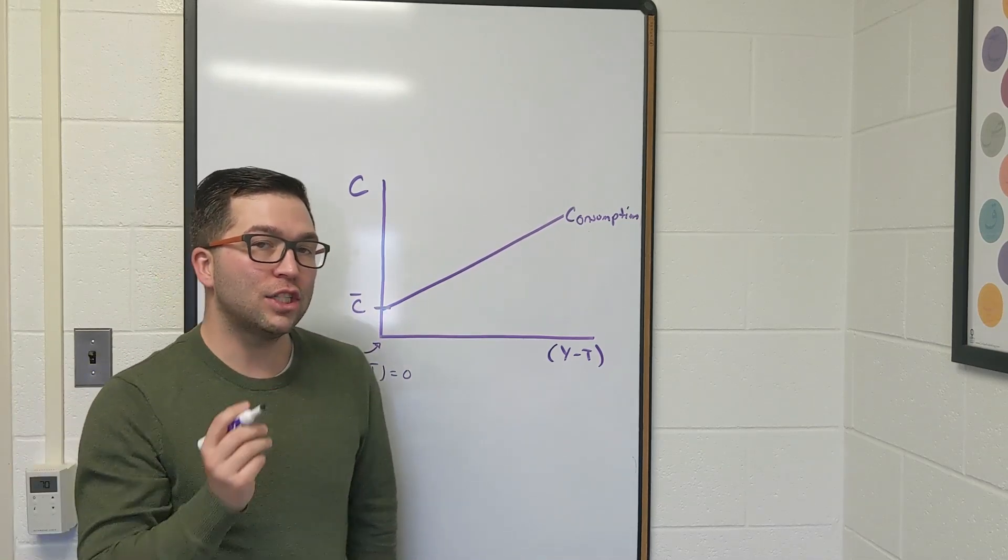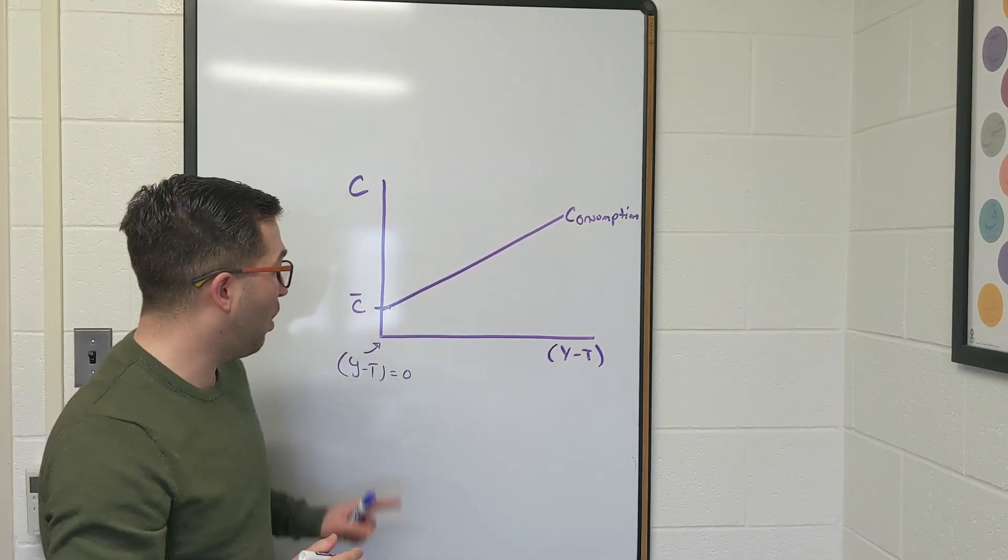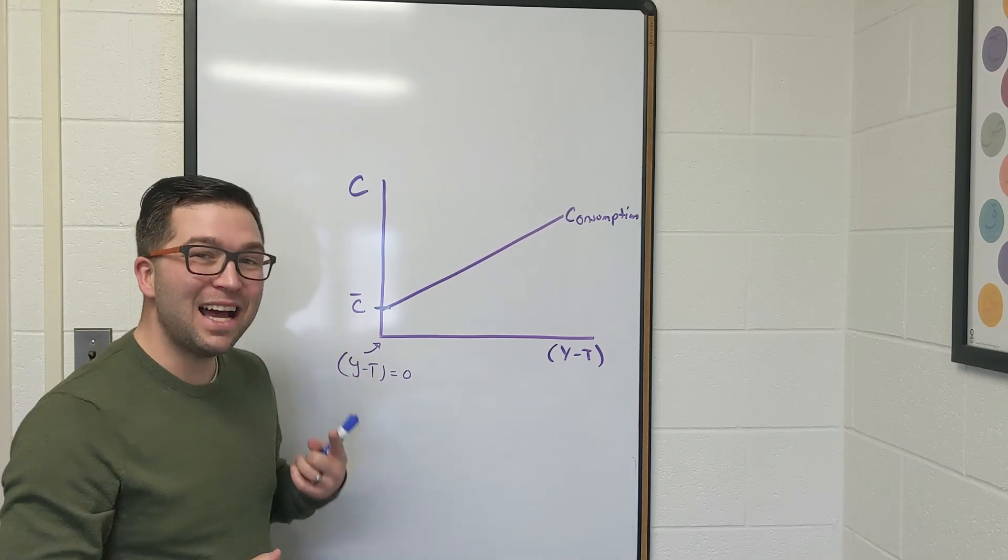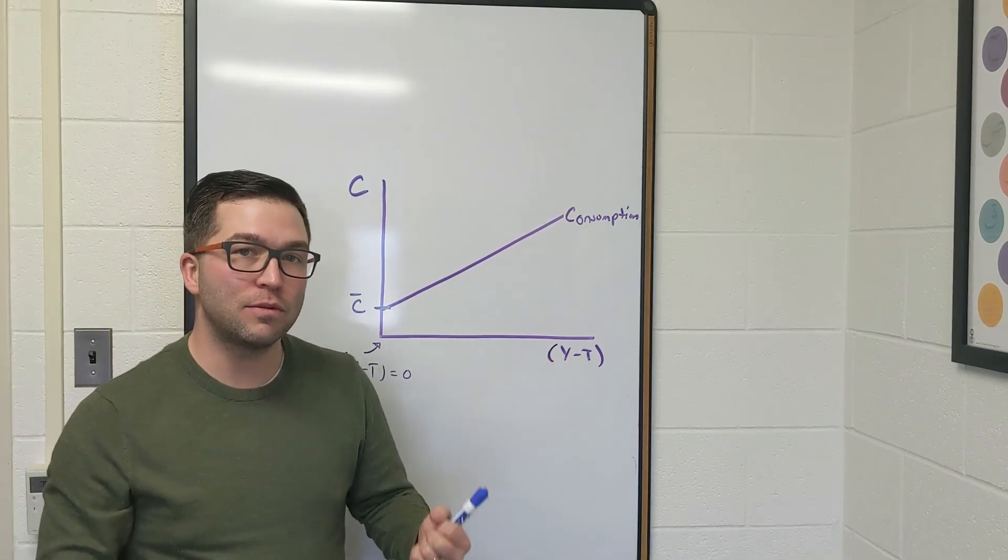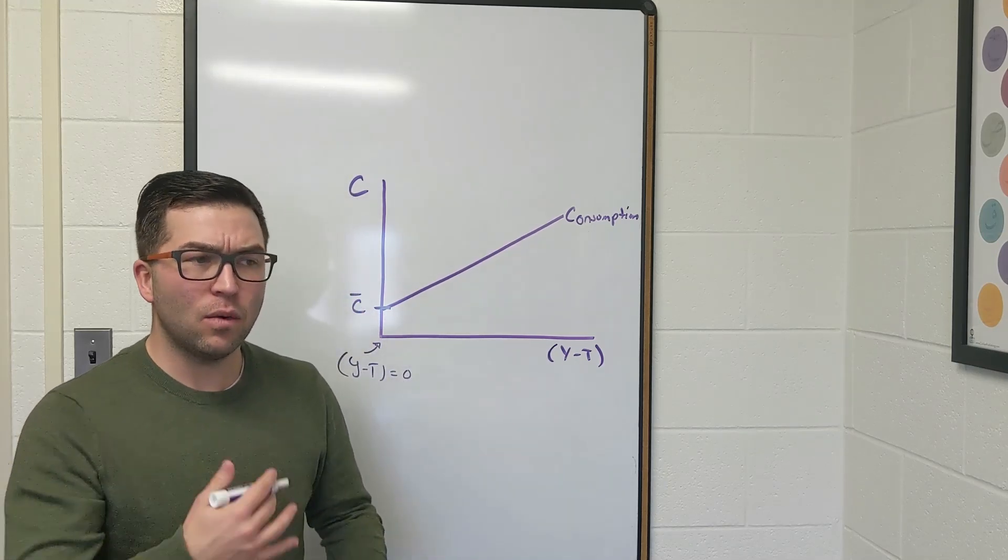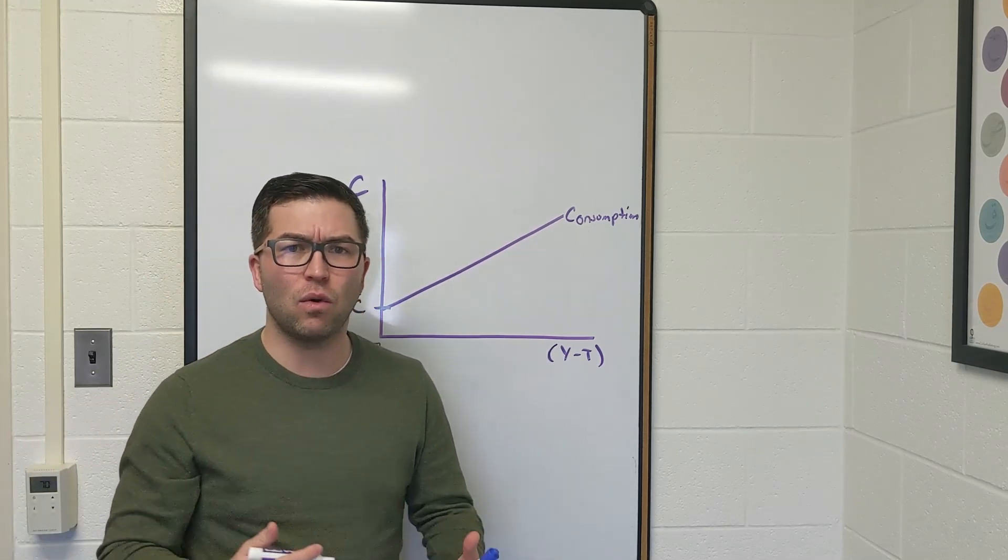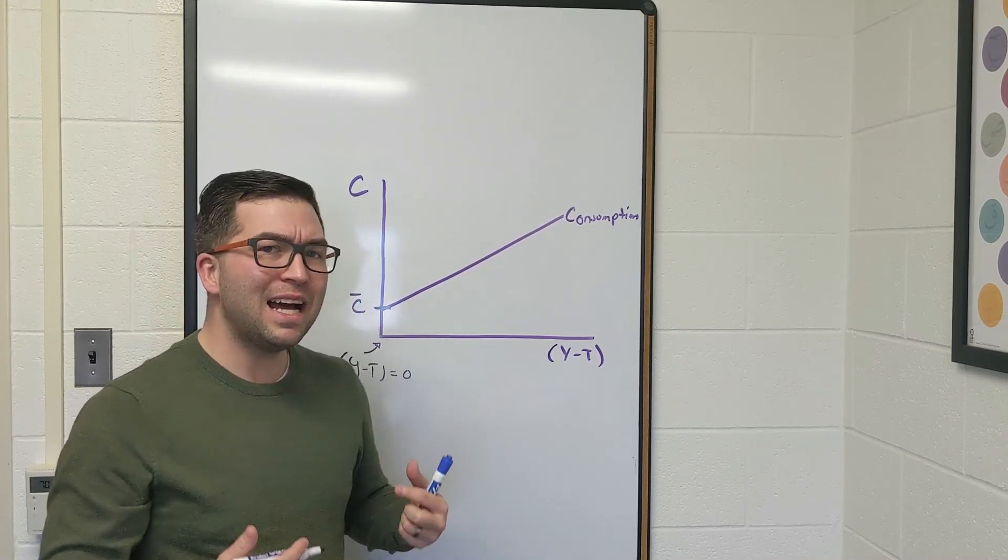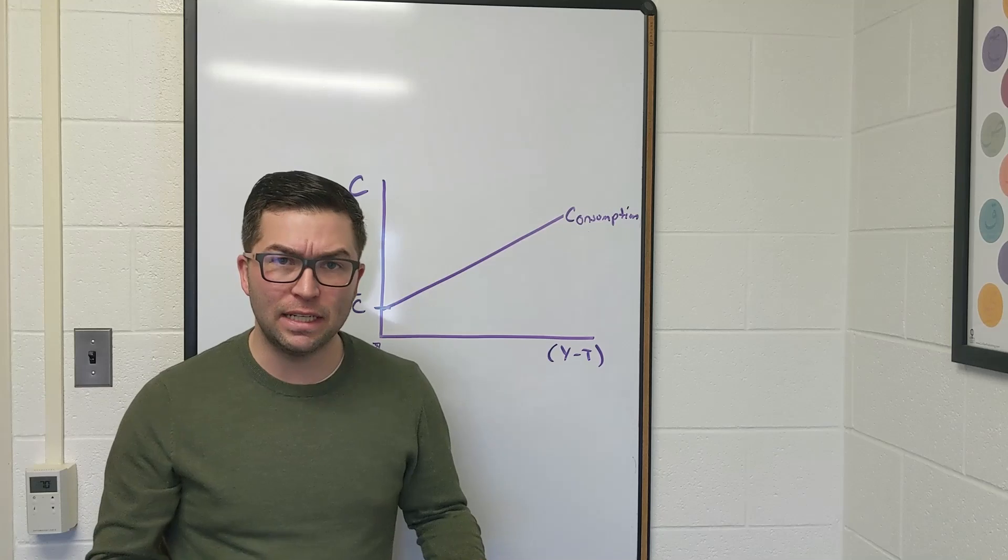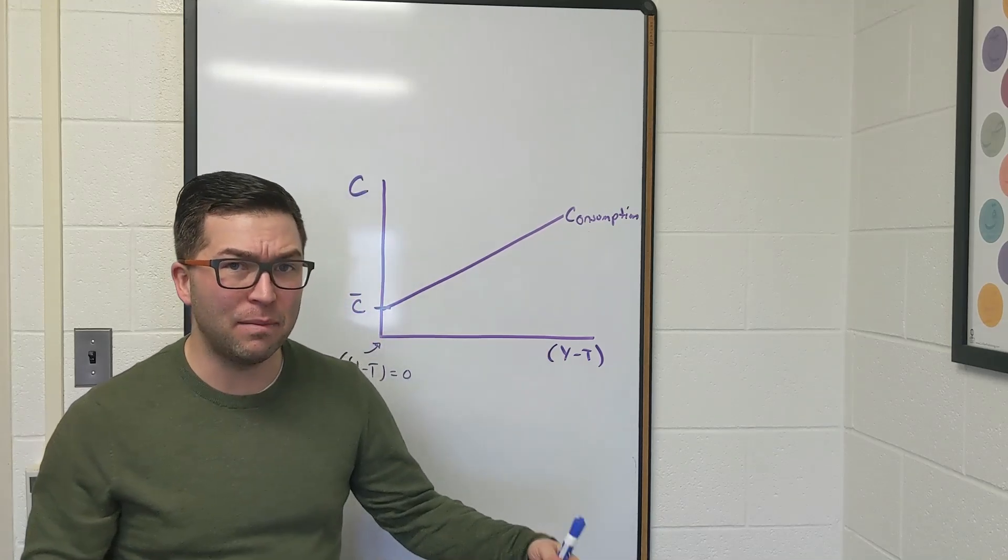We're going to call that autonomous consumption. It's the part of consumption that does not depend on overall income minus taxes, our disposable income. Because we do consume out of things like wealth or out of savings or we may need to borrow. There's lots of things that we consume that's not dependent on overall income. So that's the same at the economy level.